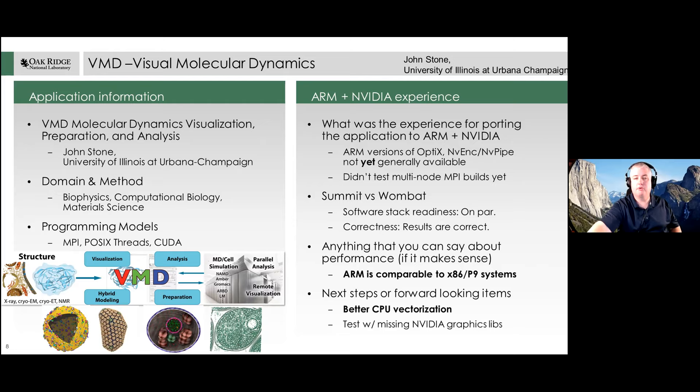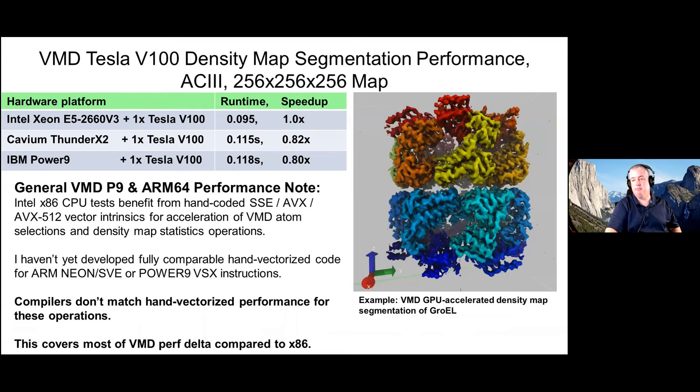Here we have a comparison of the three platforms for density map segmentation. This is taking a cryo-electron microscope density map and doing some analysis so that we can identify connected sub-regions of the density. This allows scientists to more easily label and operate on different parts of the atomic structure and to align atomic structures to these microscopy density maps.